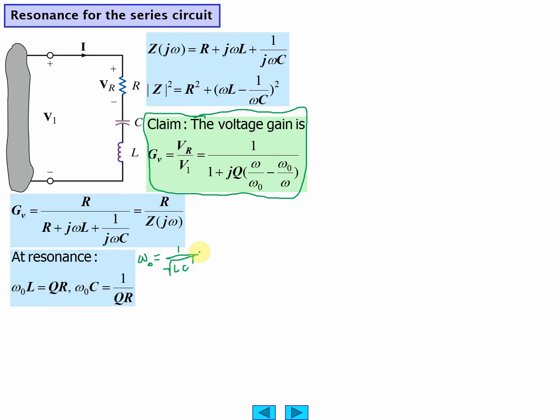And you plug and chug into this, you get for the first one here you get QR equals root L over C.